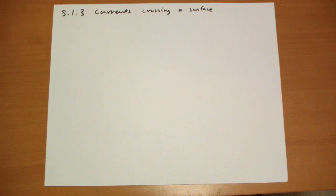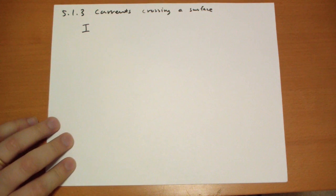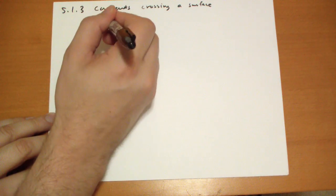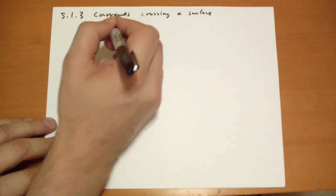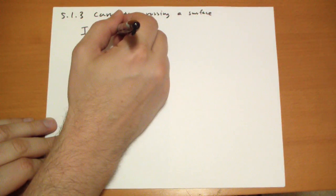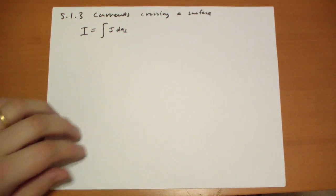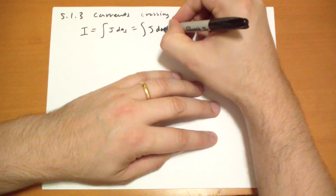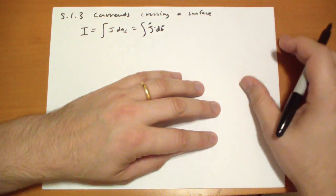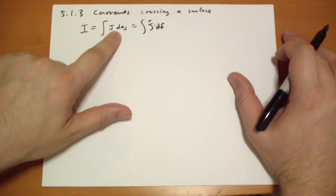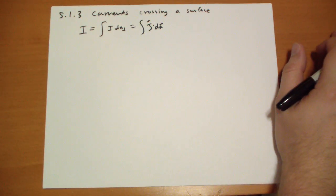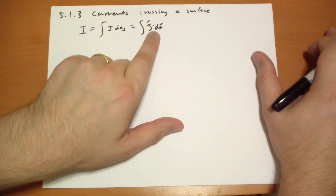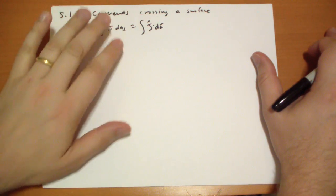Alright, so we know that the current flowing through some arbitrary surface is equal to the volume current times the area that's perpendicular to that. Well, that's just the dot product: J·dA vector. We take those two and we dot them through. That's the amount of current flowing across some arbitrary surface. The dot product will only pick out the perpendicular component. The parallel component doesn't contribute at all to the dot product.